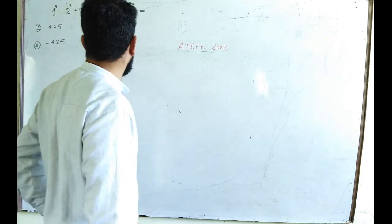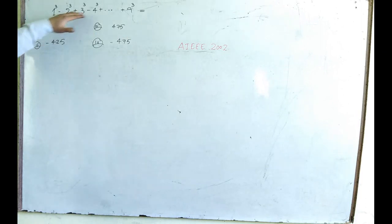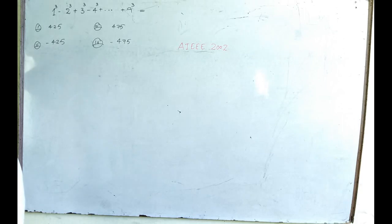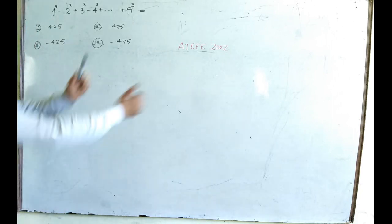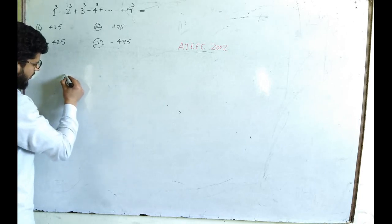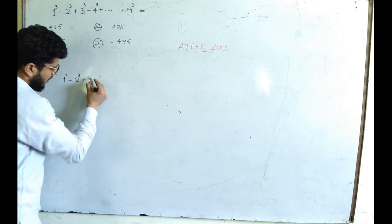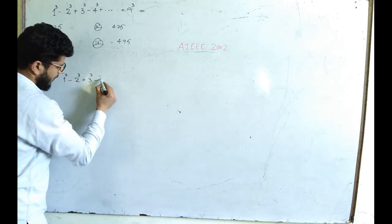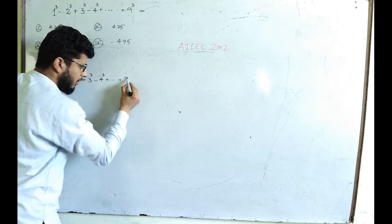One more question from AIEEE 2002. This time we are supposed to find the sum of cubes of terms that are alternately positive and negative — positive, negative. We are supposed to find the sum up to 9. So firstly I can write this as 1 cube minus 2 cube plus 3 cube minus 4 cube, and so on, plus 9 cube.